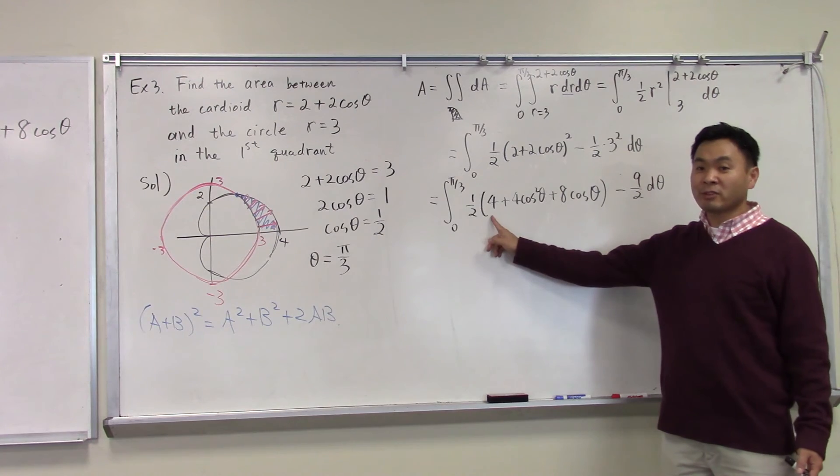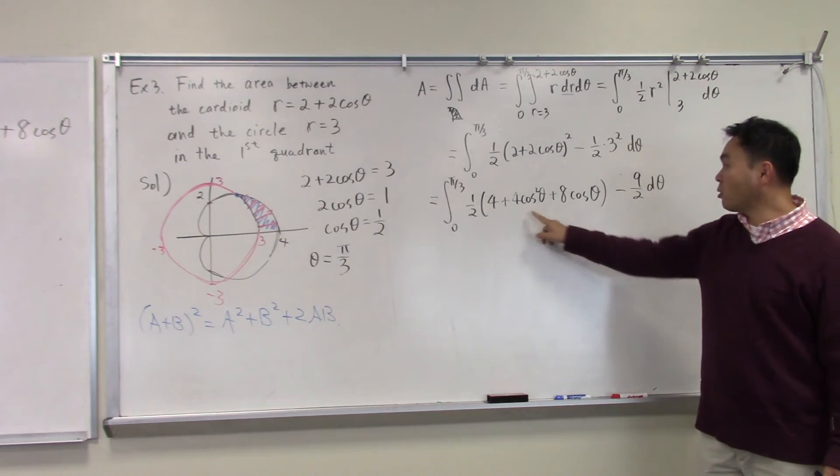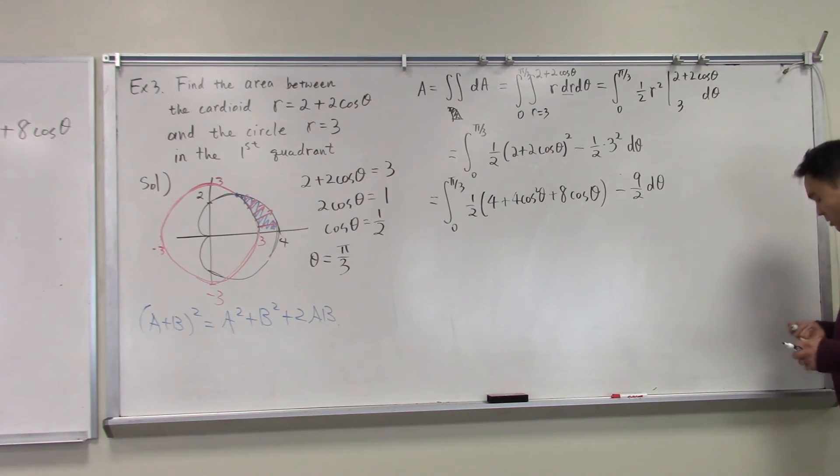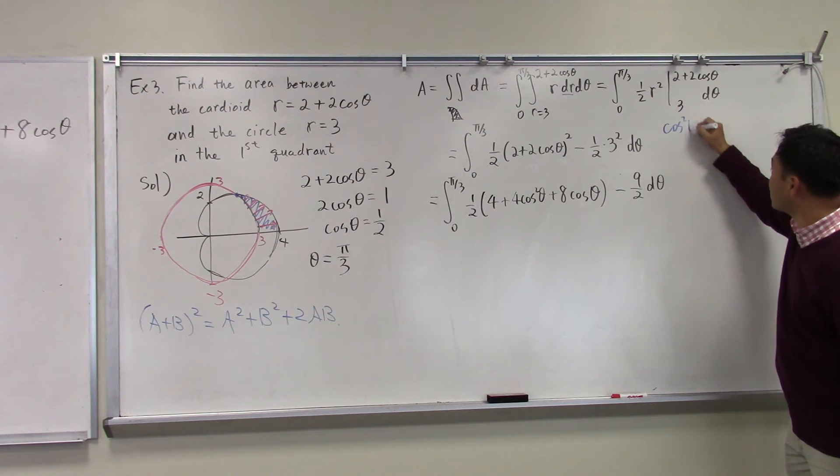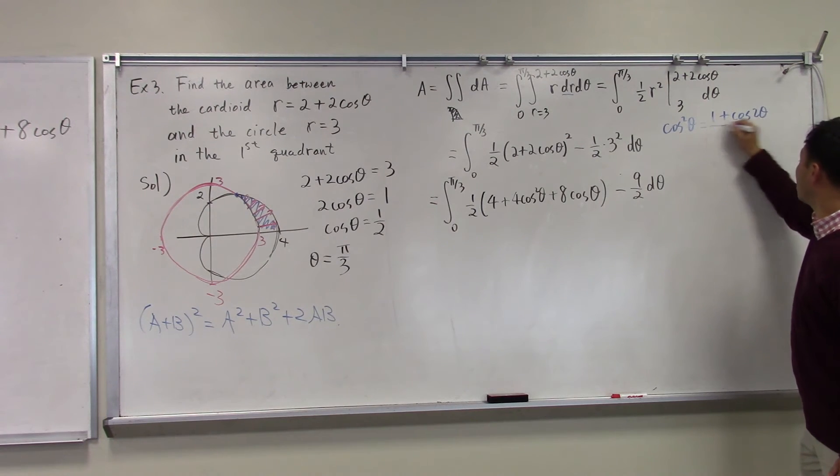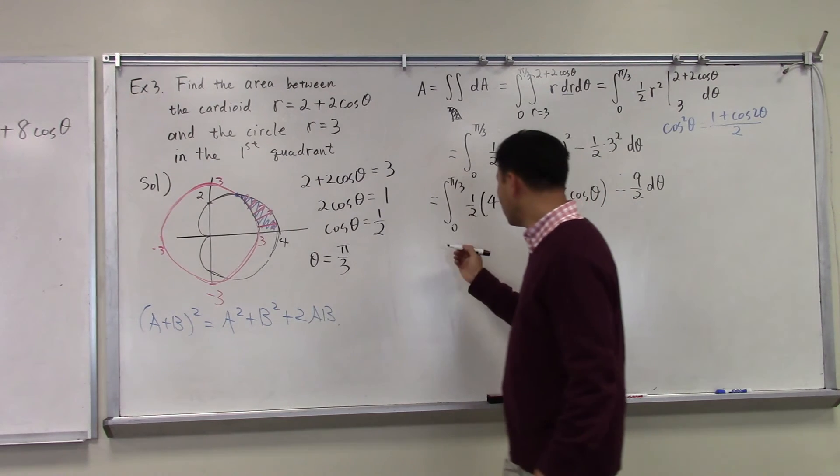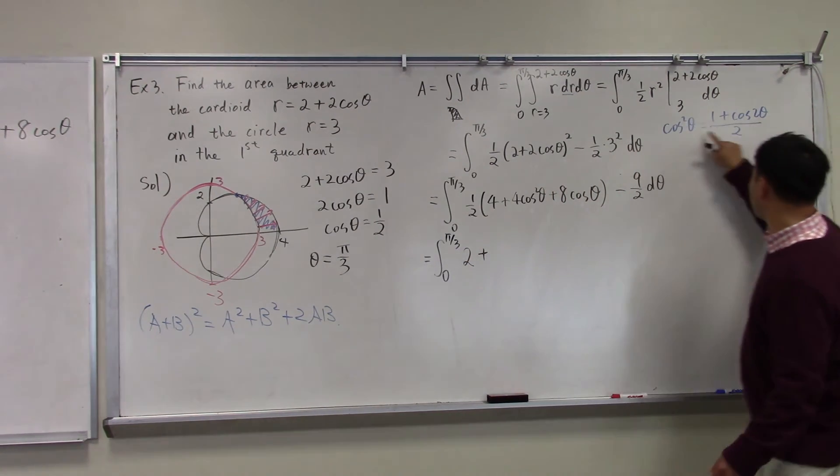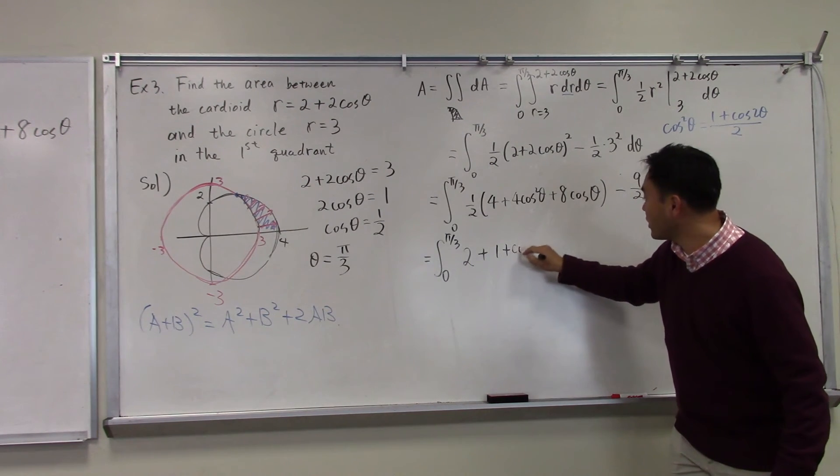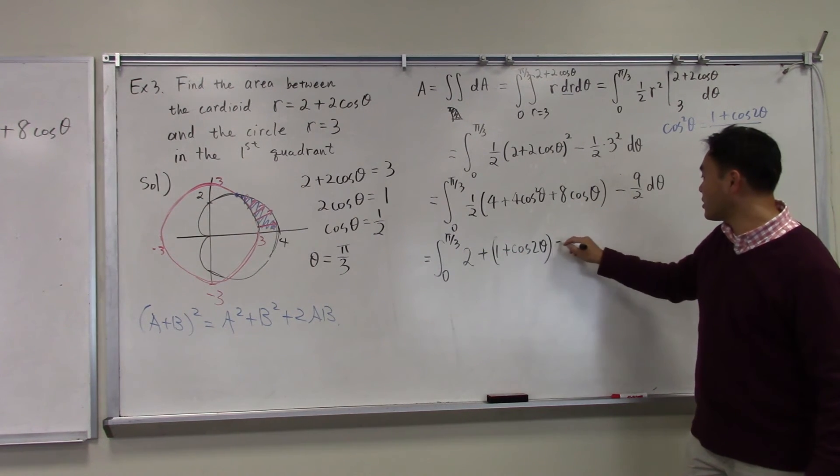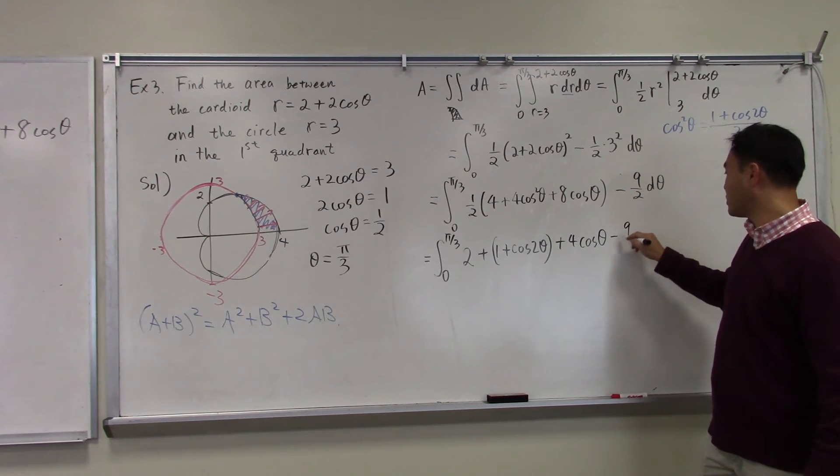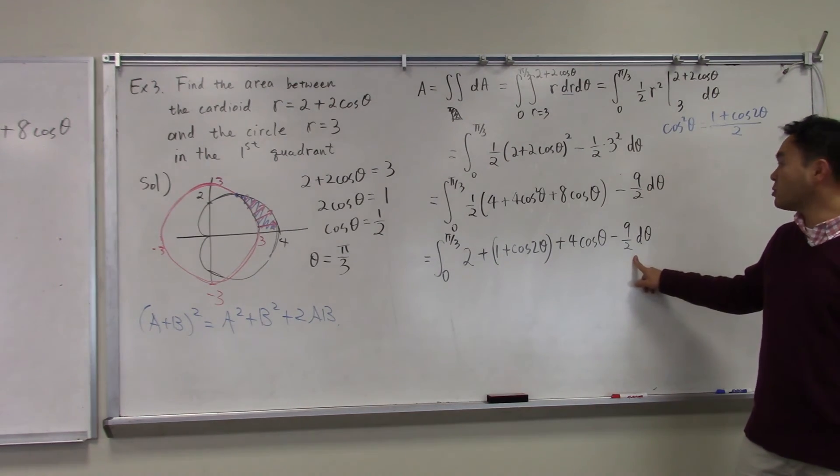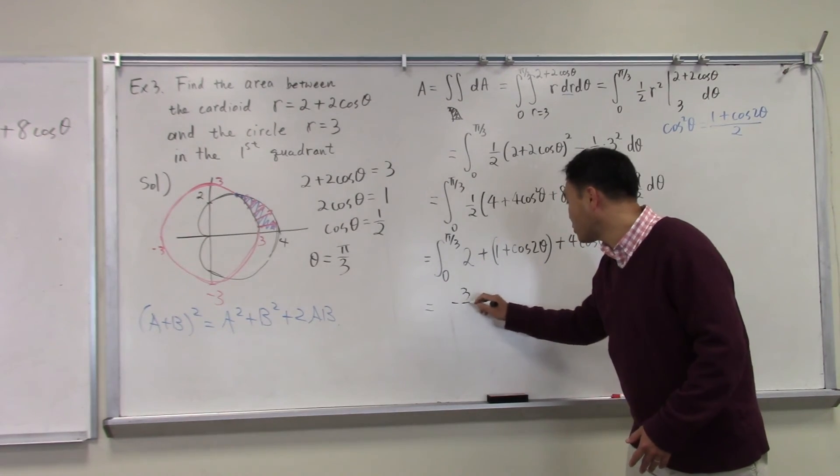And then this is minus nine over two d-theta. Four and cosine theta, there's no trouble integrating. The only thing that will be a little hard to integrate is this cosine squared. To integrate cosine squared, you need to use the formula cosine squared theta is (one plus cosine two theta) over two. Multiply one half through, so it's two plus two cosine squared theta. But two cosine squared theta is one plus cosine two theta. One half times eight cosine theta is four cosine theta minus nine over two. Two plus one is three minus nine over two, that's negative three over two. If you integrate negative three over two, you get negative three over two theta.